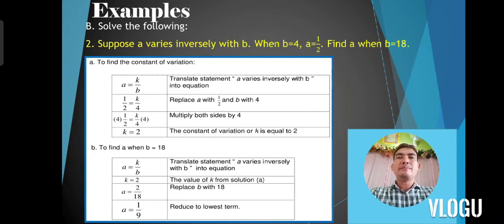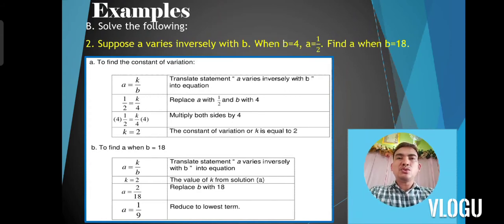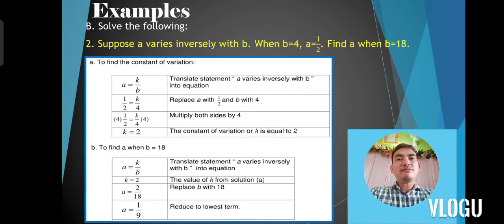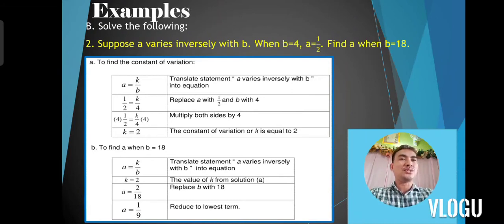To find a when b is equal to 18, use the equation a is equal to k over b, where k is 2 and b is 18. Replace b with 18: a is equal to 2 over 18. Simplify — divide by 2 — and you get 1 over 9. Therefore the value of a is equal to 1 over 9.